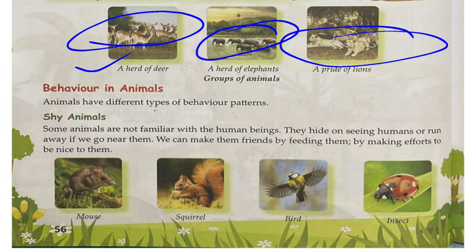Behavior in animals: animals have different types of behavior patterns. Shy animals are those that are not familiar with human beings — they hide on seeing humans or run away if you go near them. We can make them our friends by feeding them and being nice to them.